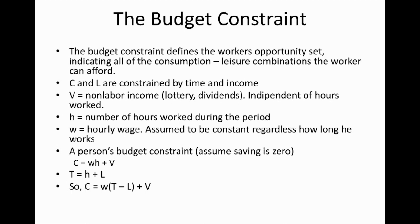Given the above notation, we can represent a worker's budget constraint assuming that saving is zero as follows. The level of consumption C is equal to W, the wage rate or hourly wage, times H, hours worked, plus V, the non-labor income. This expression gives us the overall amount of consumption that this worker can afford to enjoy given his or her available income, assuming that saving is zero.